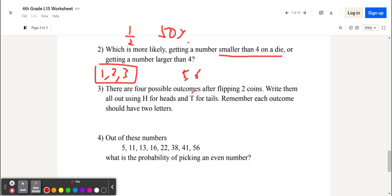There are 4 possible outcomes after flipping 2 coins. Write them all out using H for heads and T for tails. Remember, each outcome should have 2 letters. So, one outcome is they both are heads. Another outcome is they both are tails. And then, 1 heads and 1 tails. But there's actually another outcome, and that's 1 tails and 1 heads. And so, there are 4 possible outcomes. Because these are not the same.